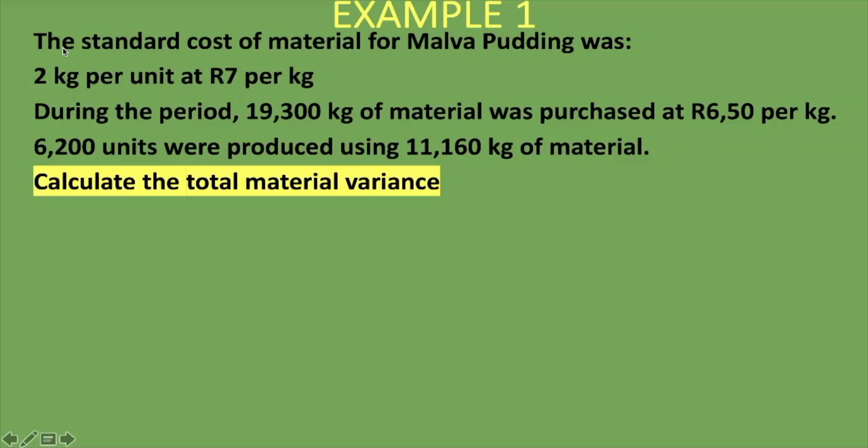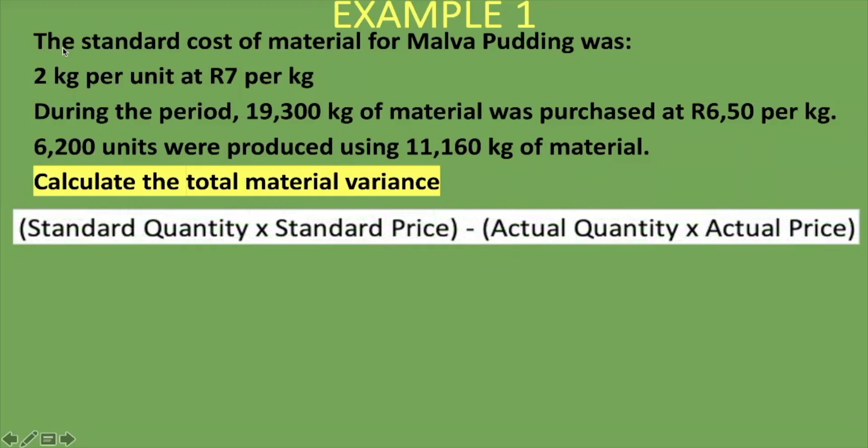Let's look at an example. We are told the standard cost of material for malva pudding was 2 kg per unit at 7 rand per kg. During the period, 19,300 kg of material was purchased at 6 rand 50 per kg. We are also told that 6,200 units were produced using 11,160 kg of material. We are asked to calculate the total material variance using the formula: standard quantity times standard price, minus actual quantity times actual price.